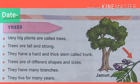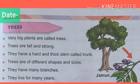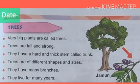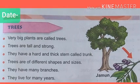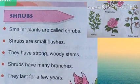Now, one by one, we will see the main characteristic features of all types of plants. Number one: Trees. Very big plants are called trees. Trees are tall and strong. They have a hard and thick stem called a trunk. Trees are of different shapes and sizes. They have many branches and they live for many years.